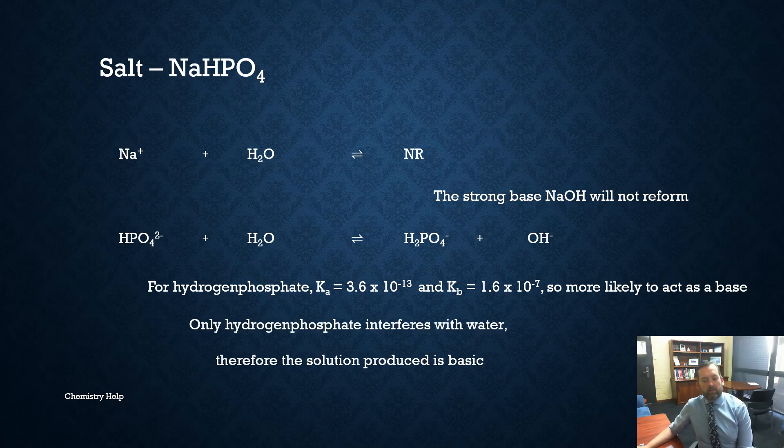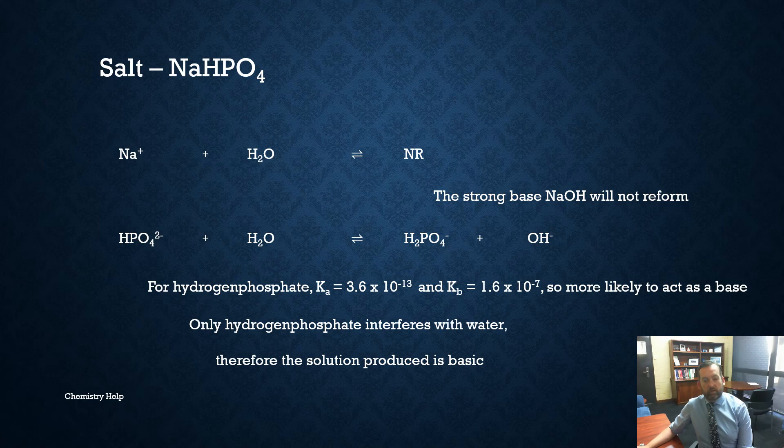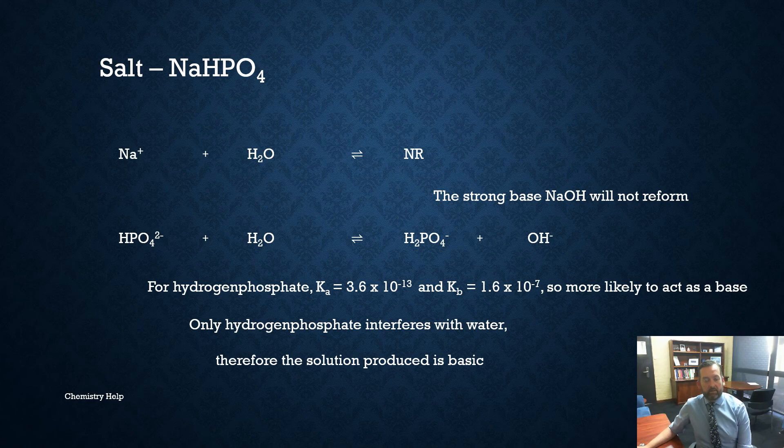All right. So only the hydrogen phosphate interferes with water. Therefore the solution produced is going to be basic. So that's a basic solution and you need to look at the Ka and the Kb for that.